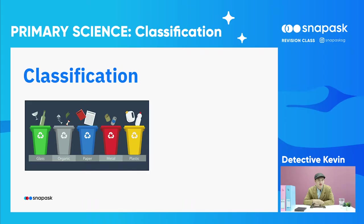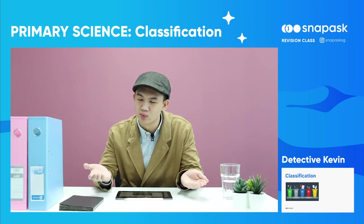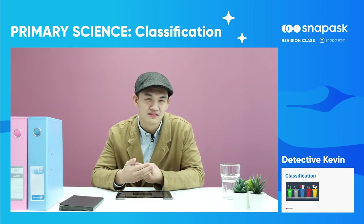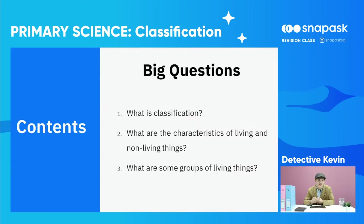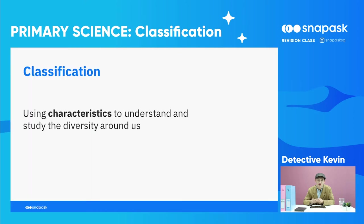Classification. Why do we classify? How do we classify? What are some ways that we can classify? We have all the missing items here and different clues along the way. What are the characteristics of living and non-living things? How can we group some of the living things? Let's start with classification.